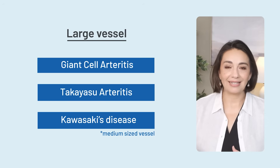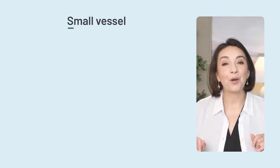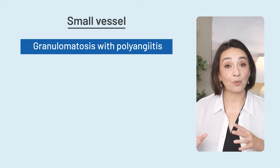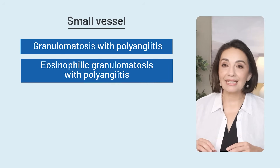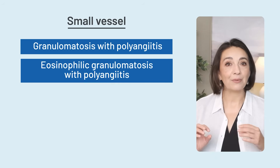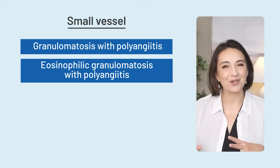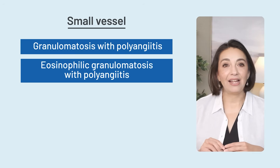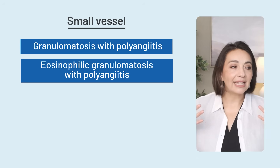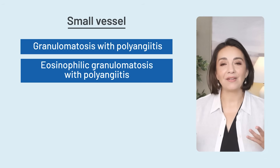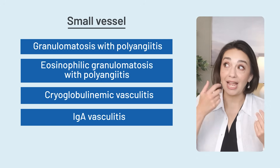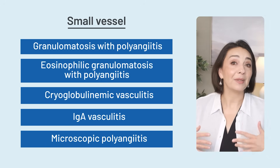The small vessel vasculitis names are even better. Small vessel vasculitides are granulomatosis with polyangiitis — or what we used to call Wegener's — and eosinophilic granulomatosis with polyangiitis, or what we used to call Churg-Strauss. Small vessel vasculitis can be seen with a particular antibody called the ANCA, A-N-C-A, and you will sometimes hear us collectively call them ANCA vasculitis. There's also cryoglobulinemic vasculitis, IgA vasculitis, and microscopic polyangiitis.